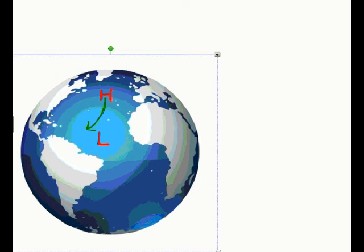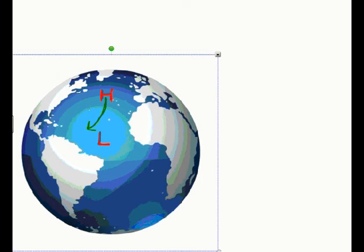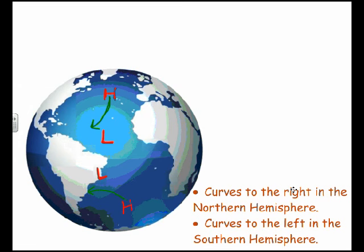In the southern hemisphere, that curve is to the left. So if there's a high pressure system here and a low pressure system over there, the air wants to move from high to low, but in the southern hemisphere the curve is to the left. To summarize: in the northern hemisphere the curve is to the right, in the southern hemisphere the curve is always to the left, and it's important that you face the same direction the wind is facing.